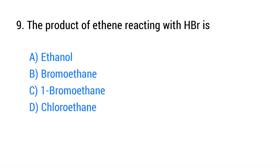Question number 9. The product of ethylene reacting with HBr is? The right answer is option B: Bromoethane.